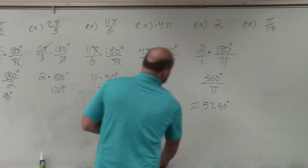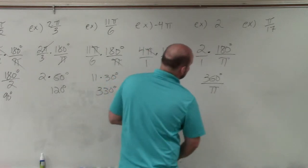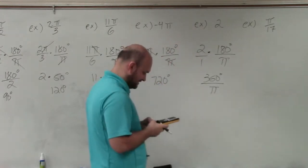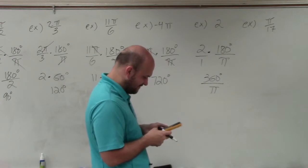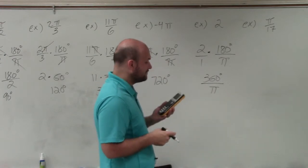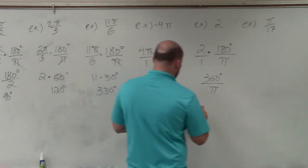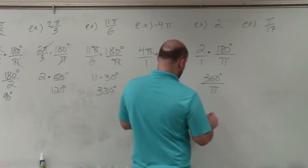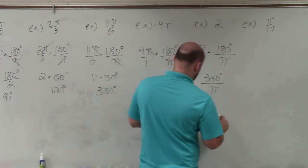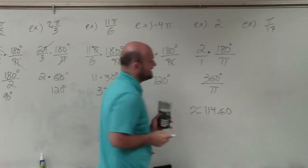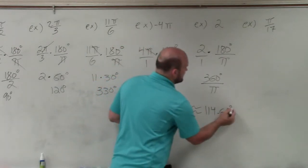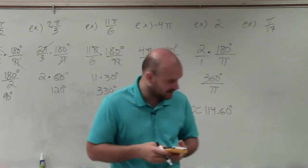I forgot to do 360 divided by π. 360 divided by π is 114.59. So let's round that. So this becomes 114.60. And that is just rounding it, I did 180 not 360.